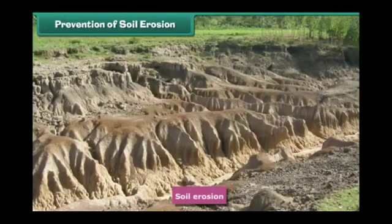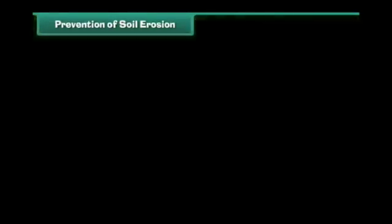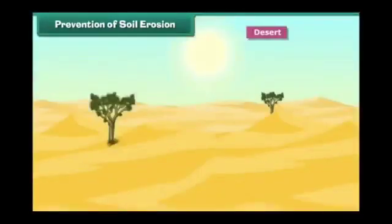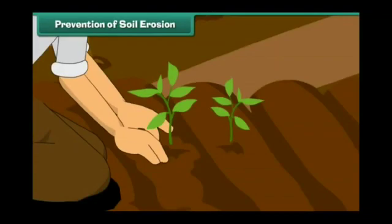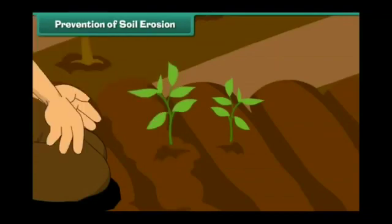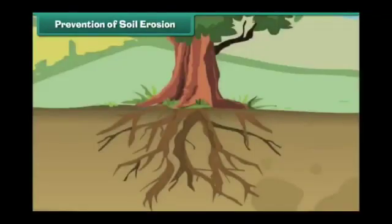Soil erosion also blocks many irrigation canals and increases the risk of flooding. The eroded soil deposits in water resources like rivers and lakes and pollutes them. Soil erosion is a major environmental problem that has affected the whole world, from forests to deserts. Thus, it is the need of the hour to conserve the soil by preventing soil erosion.